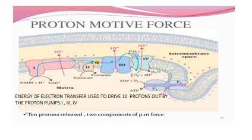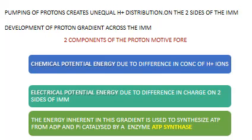As you all know, the passage of electrons from one complex to the other in the electron transport chain generates energy for the pumping out of protons into the intermembrane space. Ten protons are pumped out by complexes 1, 3, and 4. This pumping of protons creates an unequal distribution of hydrogen ions on the two sides of the inner mitochondrial membrane.